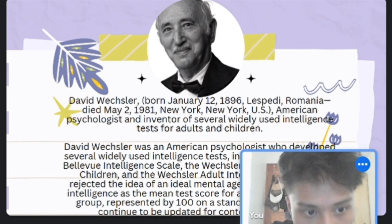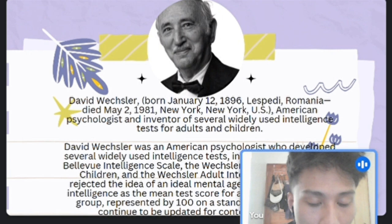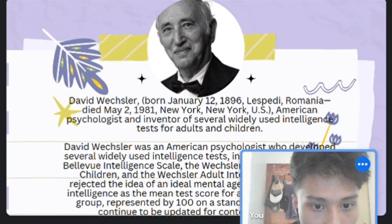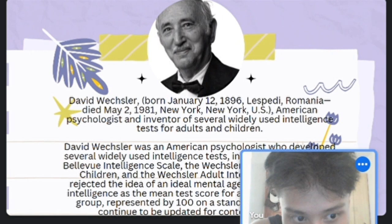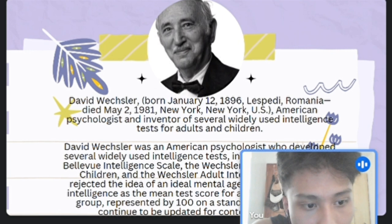David Wechsler developed several widely used intelligence tests including the Wechsler-Bellevue, the Wechsler Intelligence Scale, the Wechsler Intelligence Scale for Children, and the Wechsler Adult Intelligence Scale. He rejected the idea of an ideal mental age and defined normal intelligence as the main test score for all members of an age group, represented by 100 on a standard scale.